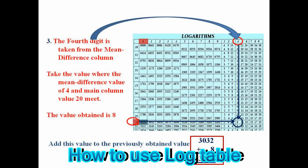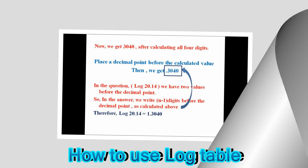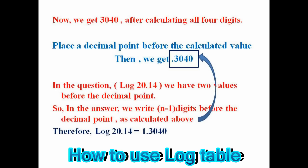Now add this value to the previously obtained value 3032. After adding 8 to 3032, we get 3040. After calculation, place the decimal point before the calculated value, then we get 0.3040.